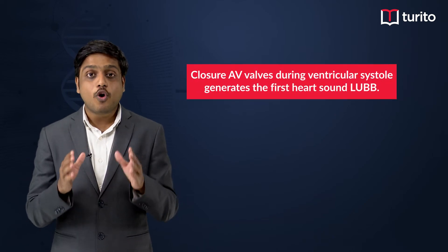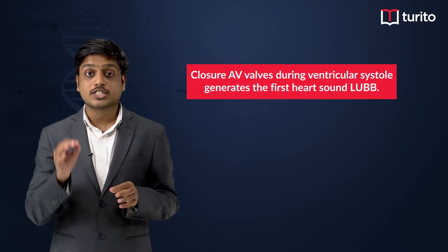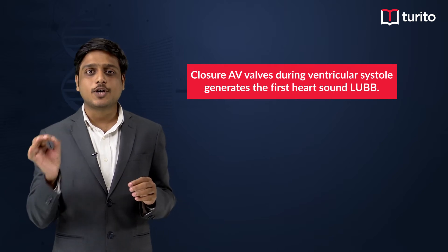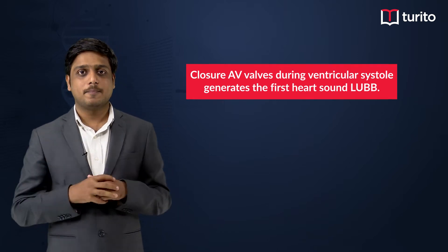When the ventricles start contracting, two major things happen. First, there is a forceful closure of the atrioventricular valves. This forceful closure of the atrioventricular valves generates the first heart sound, 'lubb.' Also, the semilunar valves that are guarding the aorta open, allowing the pushing of blood from the ventricles into the aorta.